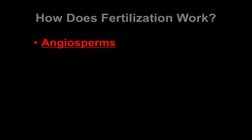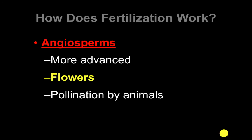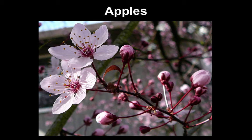A major advancement in seed plants was angiosperms and the evolution of flowers. These are much more advanced, and flowers allow you to have pollination by animals. Bees, birds, and various other types of insects are able to take pollen directly from one plant to another, so it's much more efficient and much more direct. This is why angiosperms — flowering plants — are the dominant form of plant on Earth. Apples are an obvious example, but even things like grass are flowering plants.